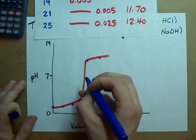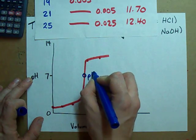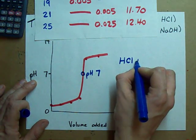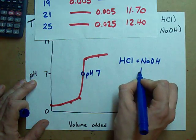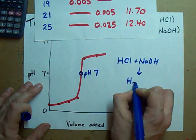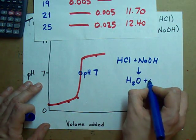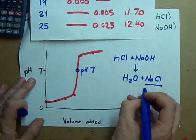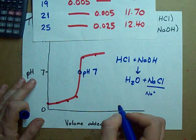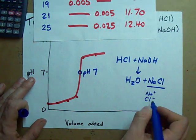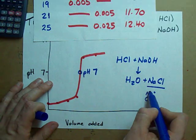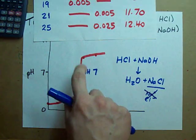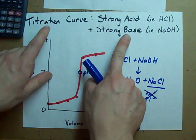The equivalence point of this titration curve is right here at a pH of 7 because when my acid and base have perfectly neutralized each other, I'm left only with water, which has a pH of 7, and sodium chloride, which does not affect the pH because Na+ is the conjugate of a strong base, and Cl- is the conjugate of a strong acid. These do not affect the pH of a solution.